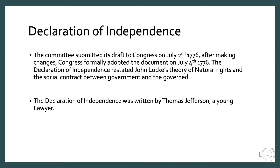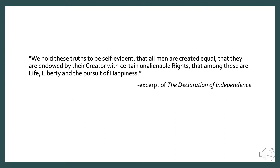Thomas Jefferson was a young lawyer, just 32 years old, when he wrote the Declaration of Independence. It is considered a secular document, meaning it had nothing to do with religion. Jefferson feared people would interpret the word 'God' to mean the God of the Bible, so he used generic words such as 'Nature's God,' 'Creator,' and 'Supreme Judge.' Jefferson also drafted the Virginia Statute of Religious Freedom in 1786, a statement about freedom of conscience and the principle of separation of church and state.